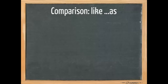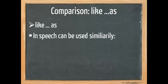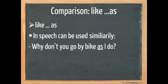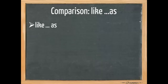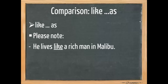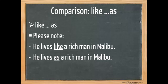Now, let's have a look at like or as. In speech, these two can be used similarly, such as, why don't you go by bike as I do? Or, why don't you go by bike like I do? Yet there is a difference. Please note, he lives like a rich man in Malibu or he lives as a rich man in Malibu. Here we have a change in meaning. If someone lives like a rich man in Malibu, he's not necessarily rich. But when we say he lives as a rich man in Malibu, this person is definitely rich. So, here there's a difference in meaning.